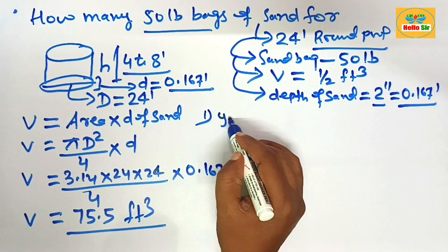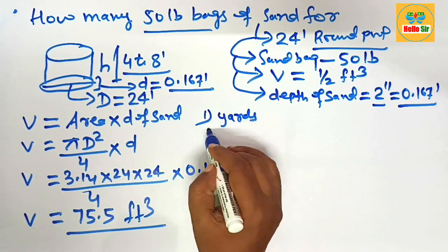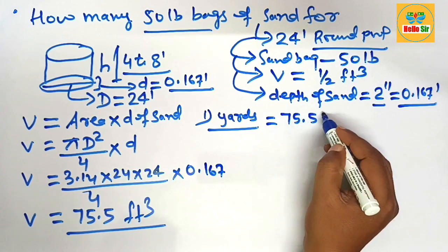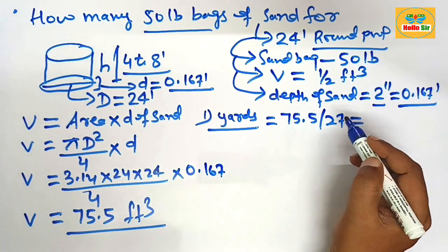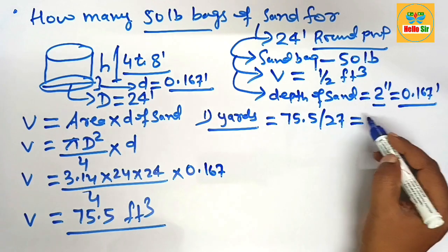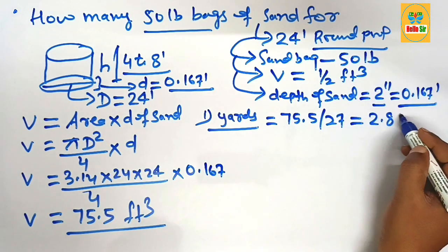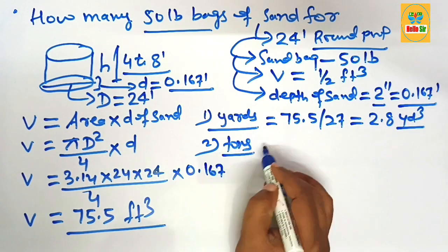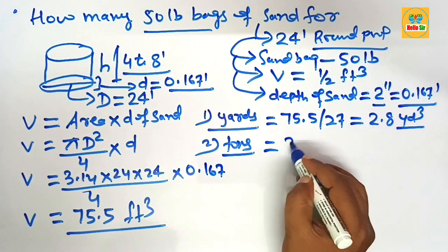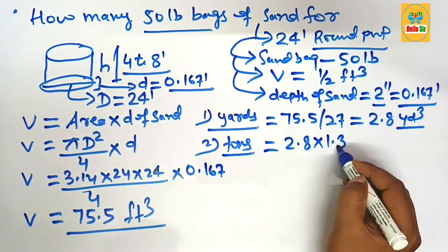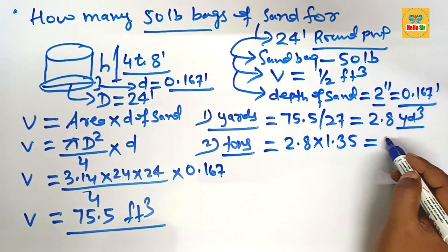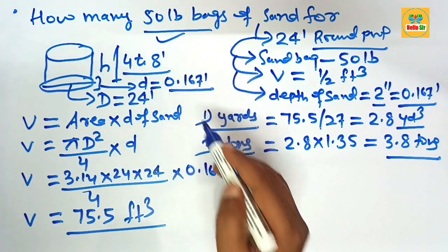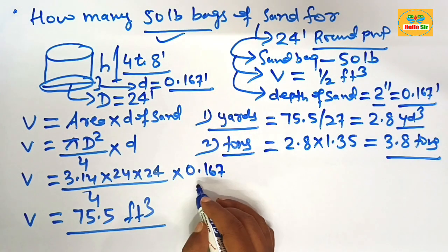If you want to calculate yards of sand required, divide your cubic feet by 27. The result gives approximately 2.8 yards of sand. If you want to calculate tons of sand required, multiply the yards of sand by 1.35, which comes out to about 3.8 tons of sand.